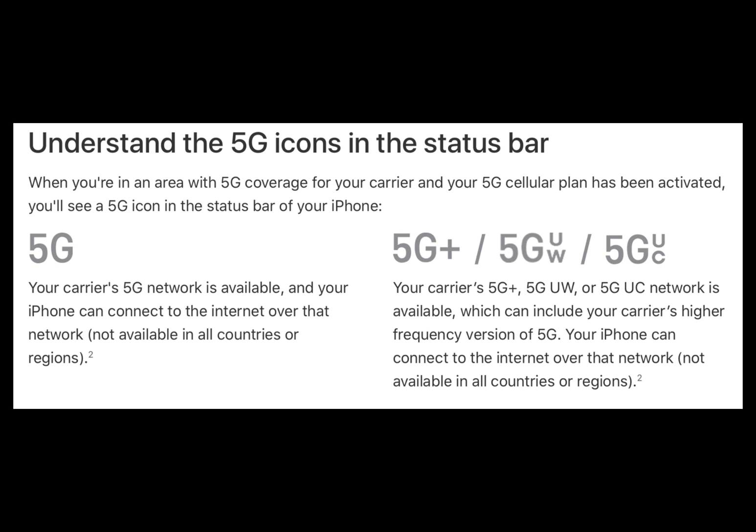T-Mobile labels it 5G UC (Ultra Capacity). If you see the plain 5G in your status bar, that signals you're on lower spectrum — greater range and coverage but slower speeds comparatively. I'll put a diagram explaining this below.